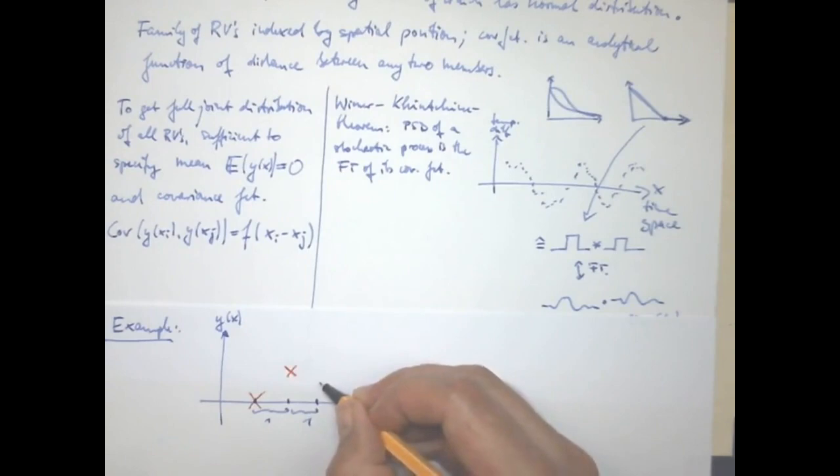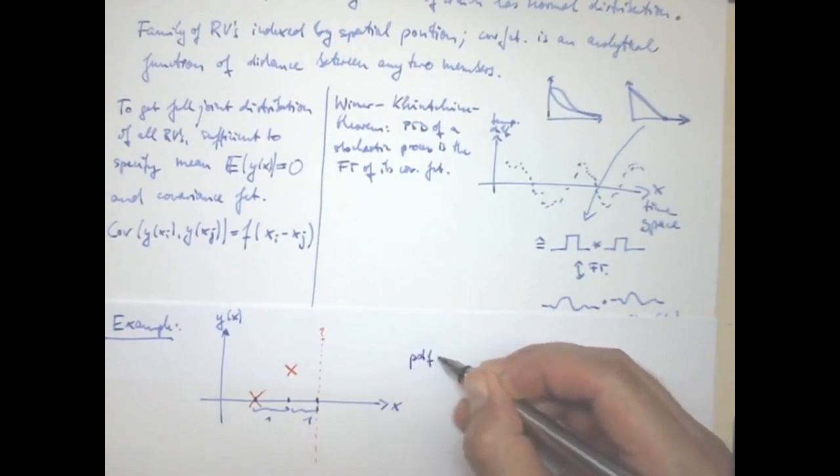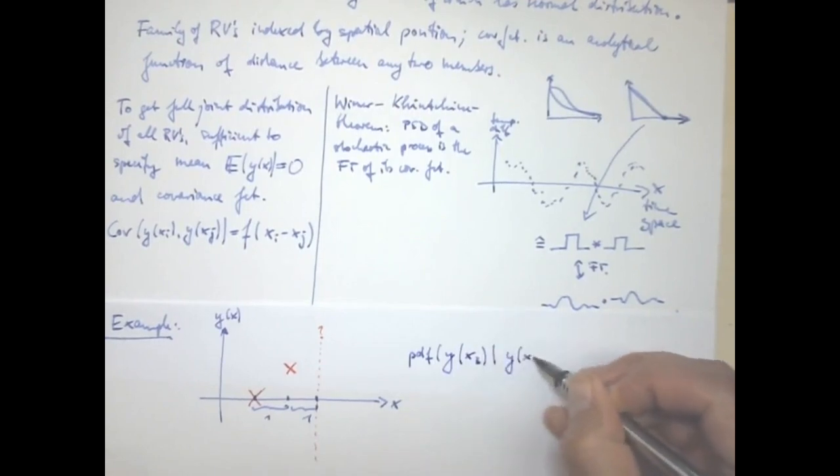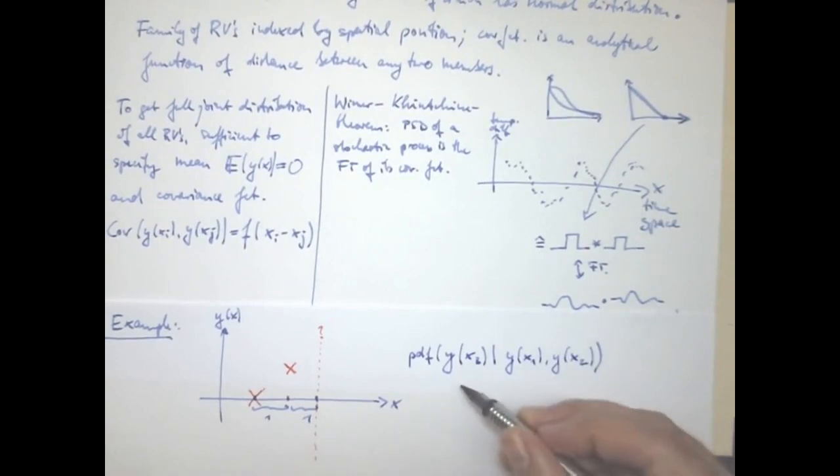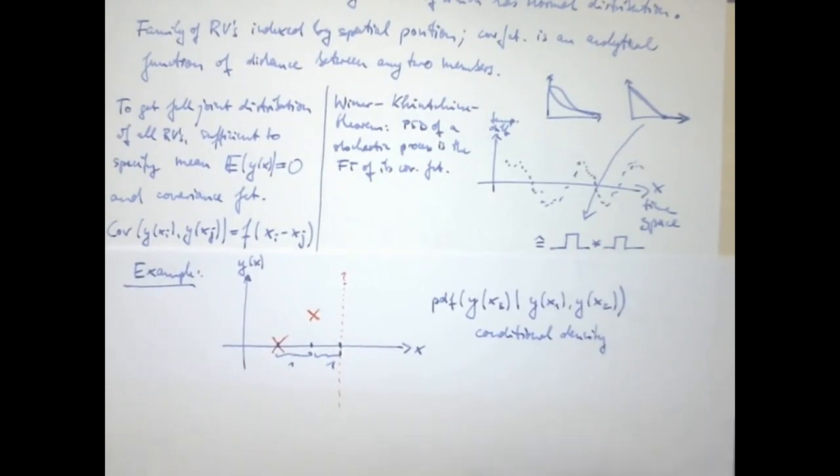And now the task is to make a prediction for the third random variable. So I'm asking for the probability density function, or just p to make it short, of my y at the location x3, given my y at the location x1, and y at the location x2. So this is a conditional density. And, well, Gaussians have the special property that the joint, the marginal, the conditional of a Gaussian are always Gaussians themselves.